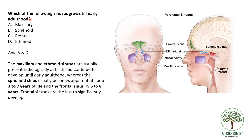Which of the following sinuses grows till early adulthood? The answer is maxillary and ethmoid sinuses. They are present radiologically at birth and continue to develop until early adulthood. The sphenoid sinus starts growing quite late, between 3 to 7 years. The frontal sinus grows the latest, between 6 to 8 years, and is the last to significantly develop.